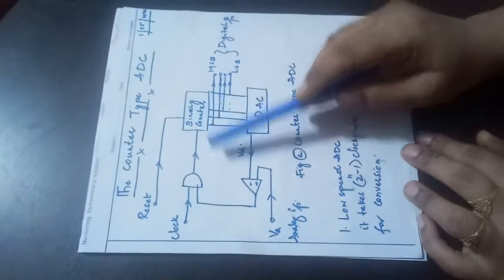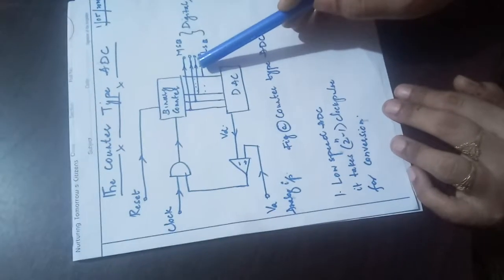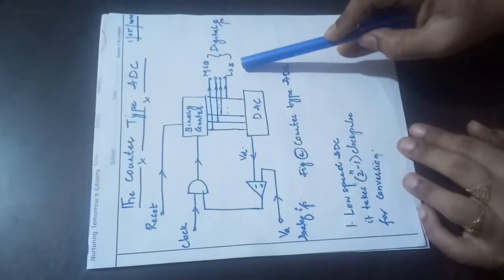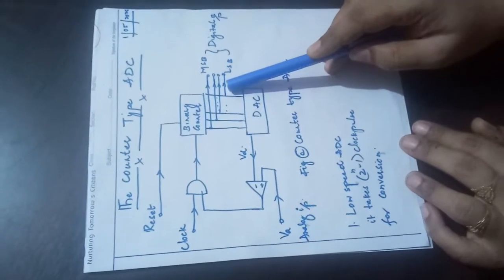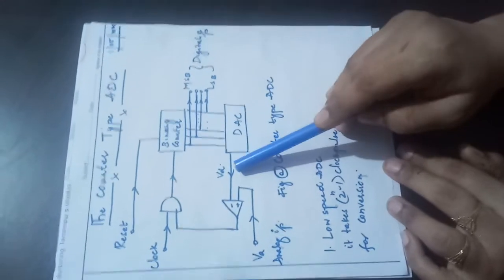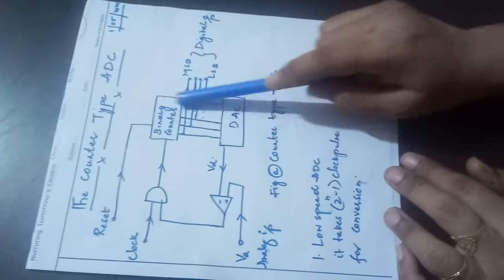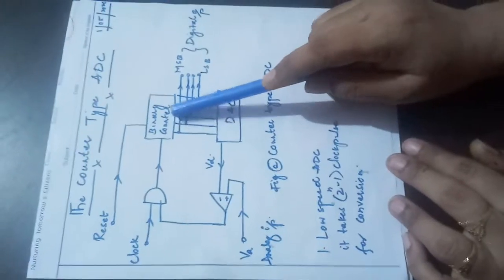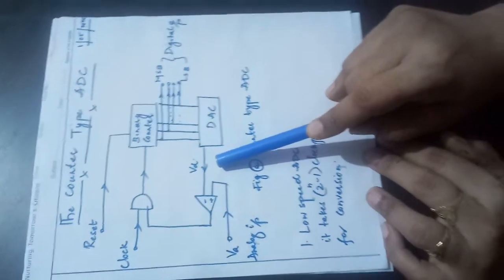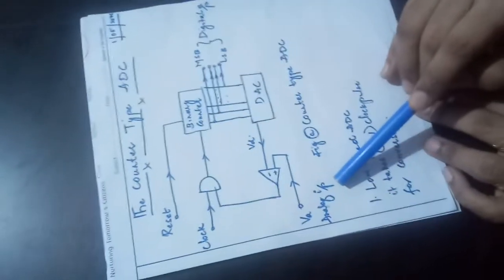The binary counter is going to start counting and give the digital output. This digital output of the binary counter is given to the DAC, which converts digital to analog. This VD is the analog equivalent of whatever clock pulses are counted in the binary counter. This VD is then compared with VA — VA is our analog input voltage.